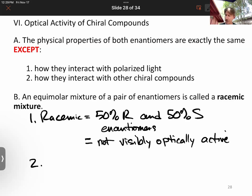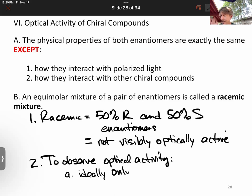And therefore, to observe optical activity, you must have more of one than the other. Ideally, you have only one enantiomer. In practice, you can have an excess of one, say 70% R and 30% S, and you can account for that fact as well, although that's not going to be the focus of what we're doing.